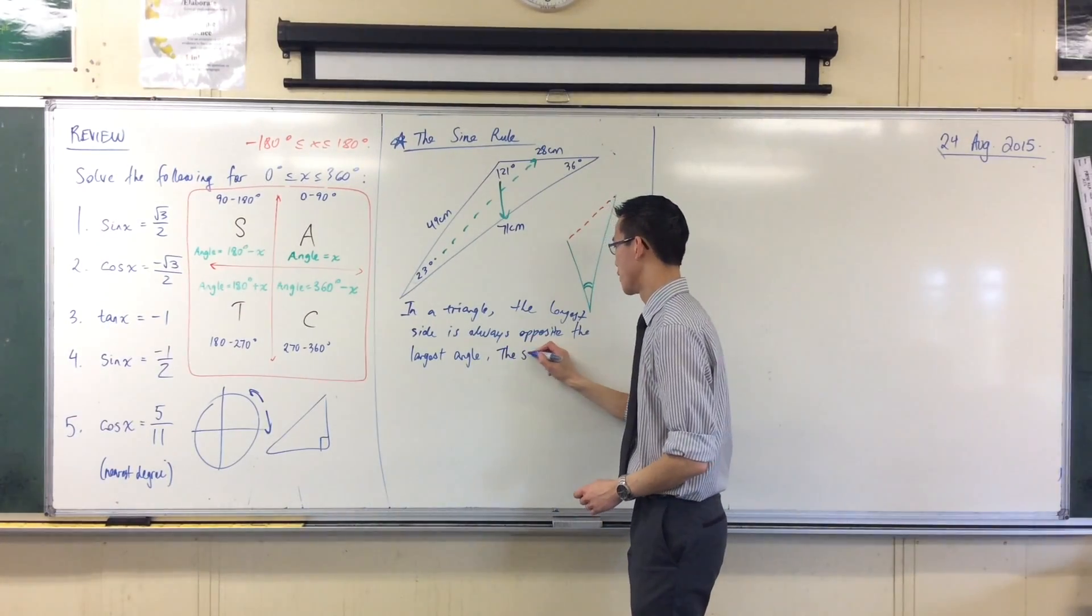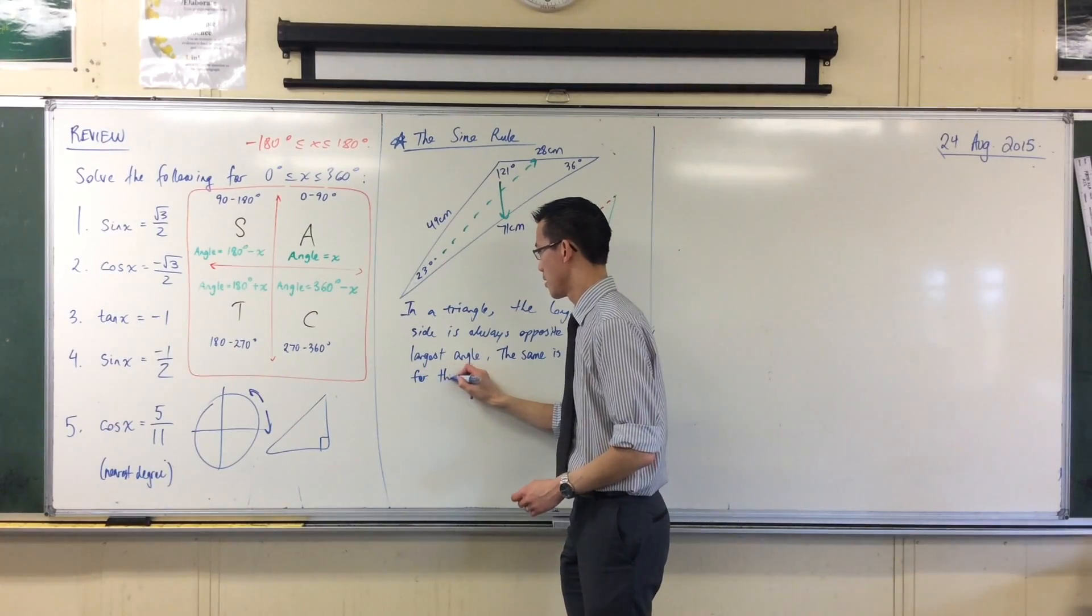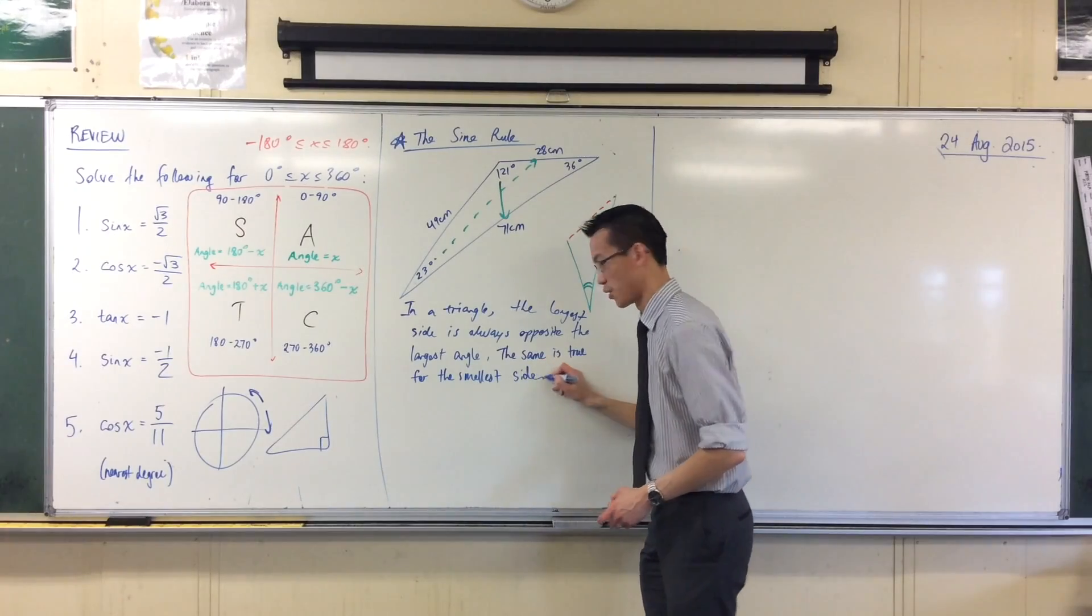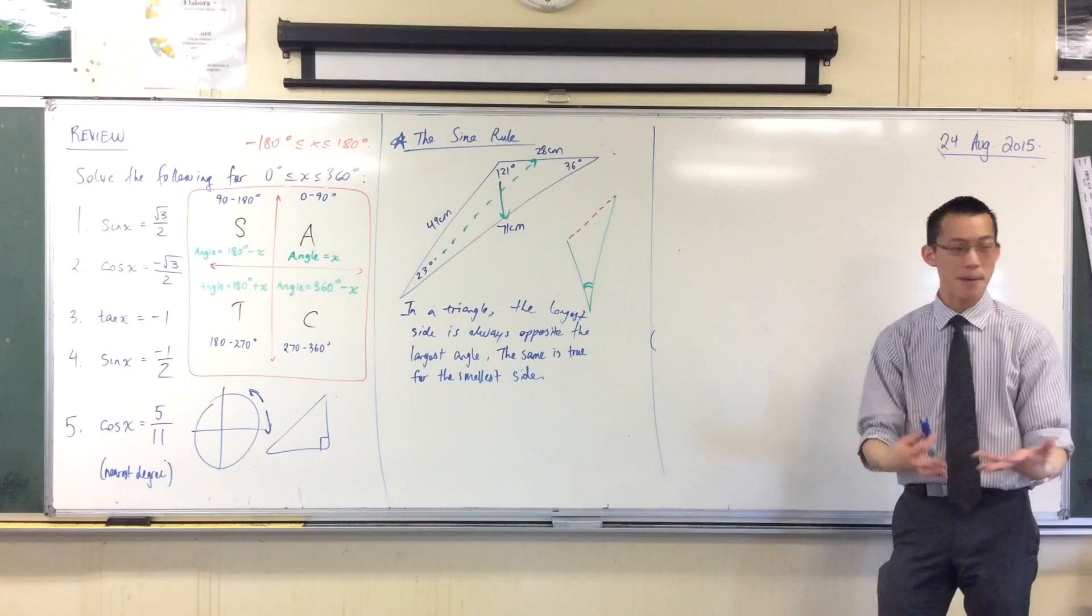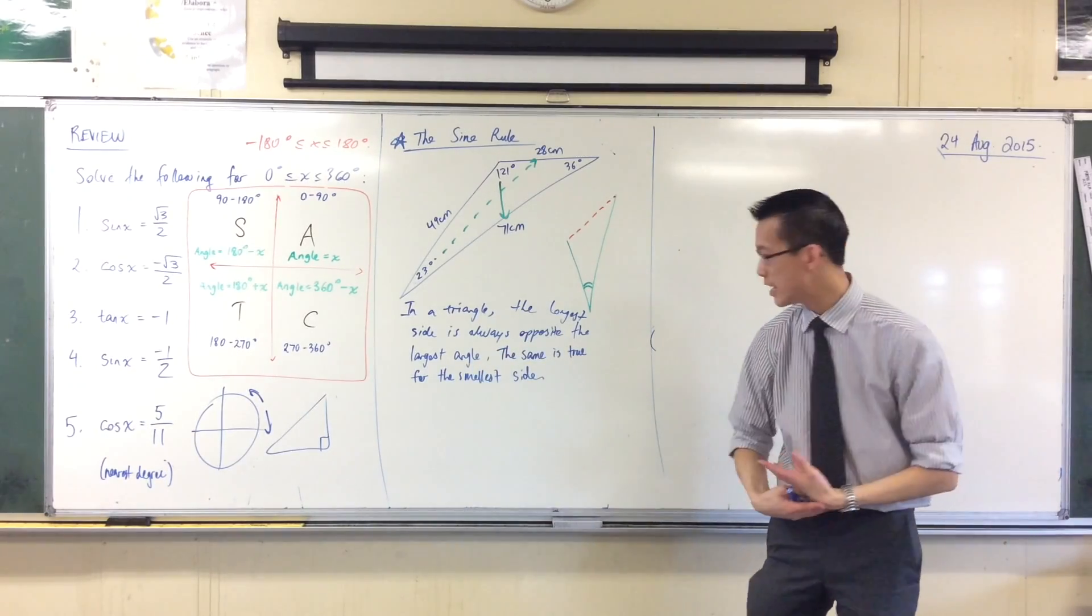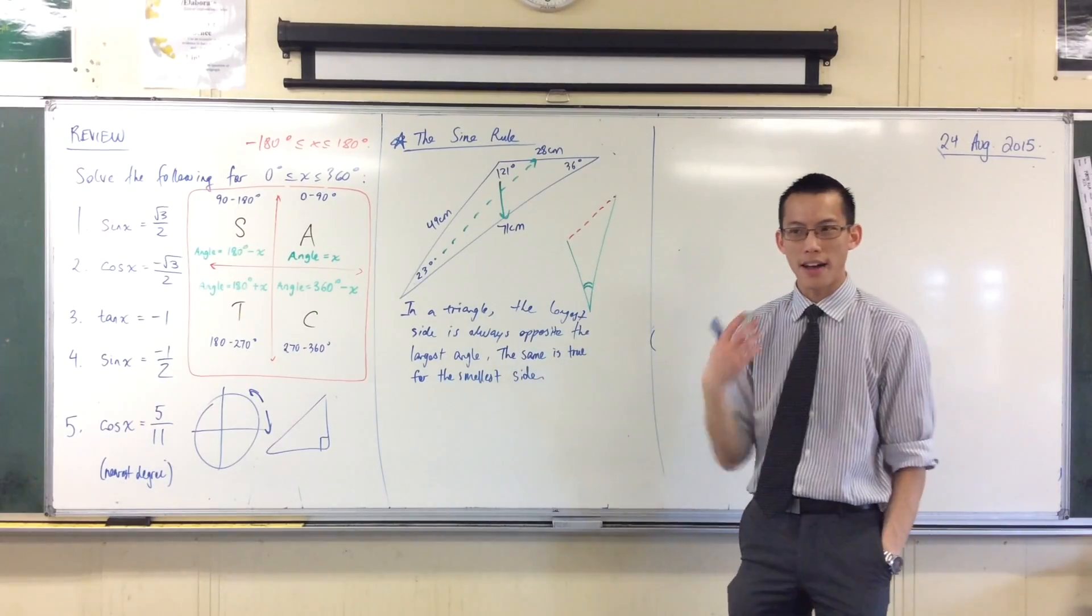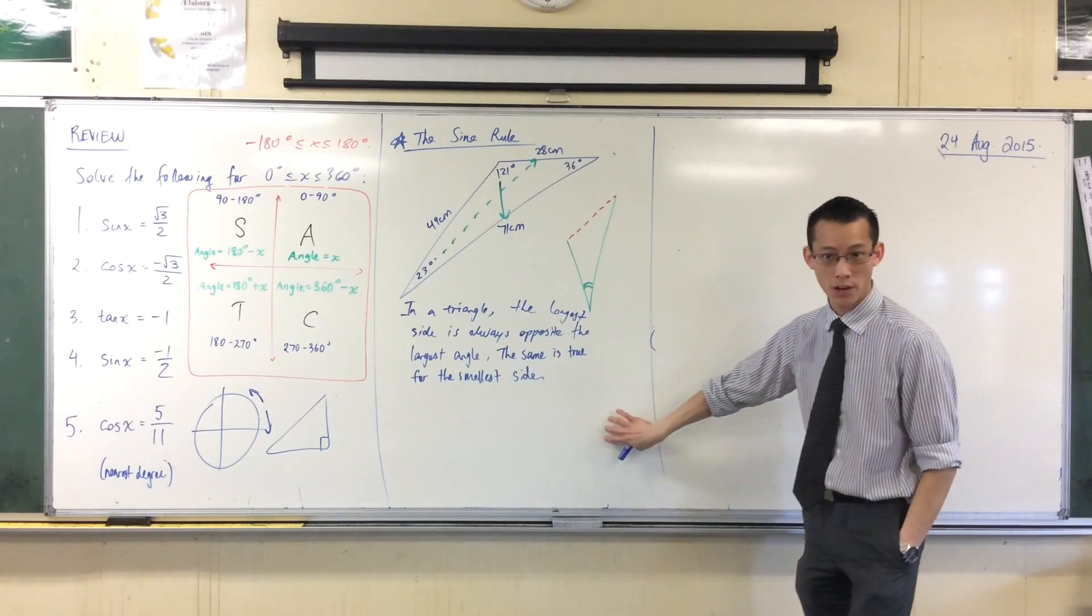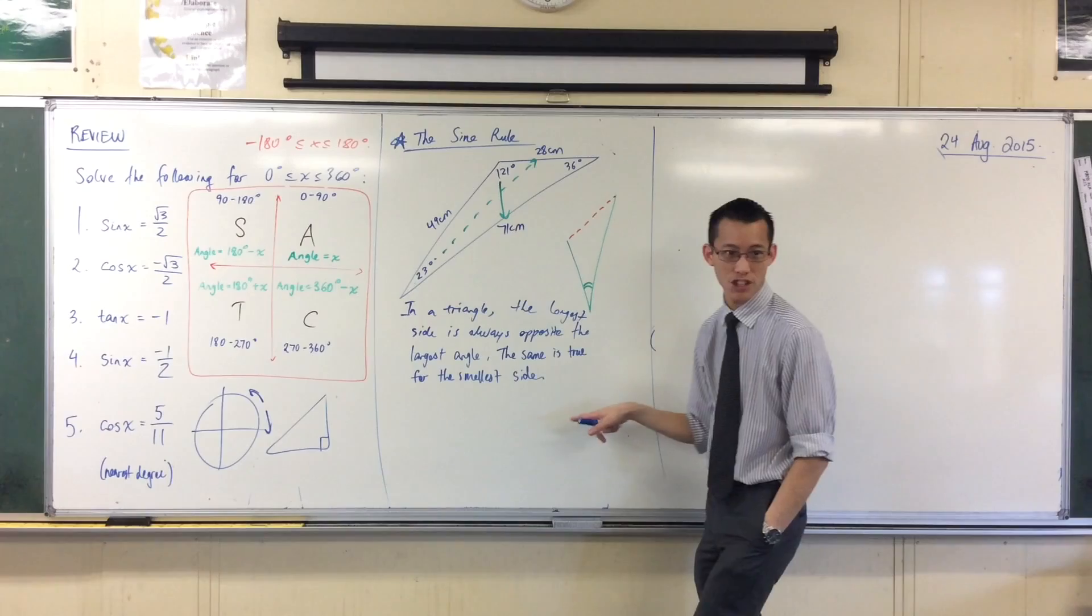The same is true for the smallest side. And if it's true for the longest side and the shortest side, it must be true for the side that's left over. And you can take the same pattern. If angles are equal, the sides that are opposite them are also equal. So this kind of thing seems like cannon fodder for understanding and using the trigonometric ratios to understand what's going on.